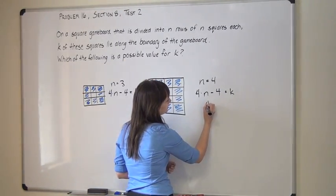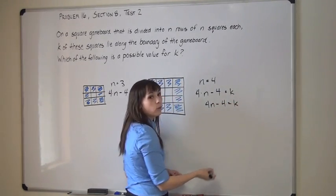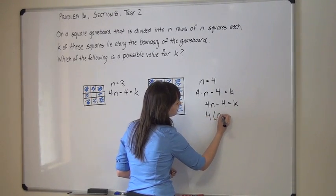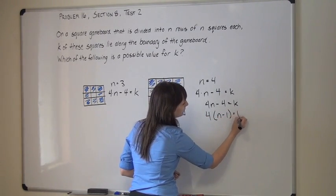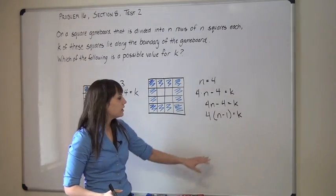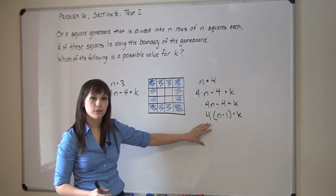The next thing you want to realize is that you can pull a 4 out of this expression and get 4 times (n minus 1) equals k. It should be a little bit more clear now that we can make a judgment about k. What I'm saying is that k has got to be a multiple of 4.